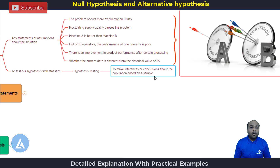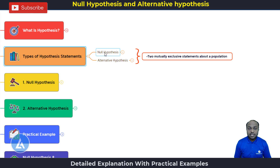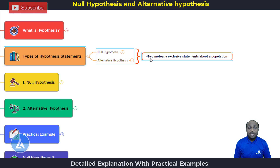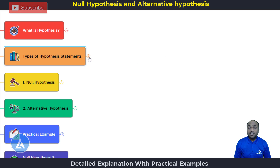So this is just an understanding of what hypothesis is. As we are discussing hypothesis testing, there are two important hypothesis statements. The first one is called null hypothesis and the second one is called alternative hypothesis. These are two mutually exclusive statements about a population — meaning these two are significantly different from one another. Null hypothesis is indicated by H0, whereas alternative hypothesis is indicated as H1 or Ha.